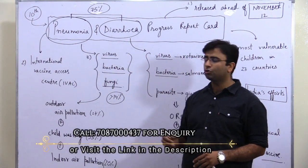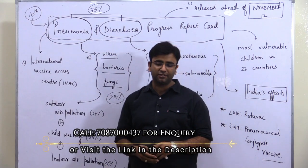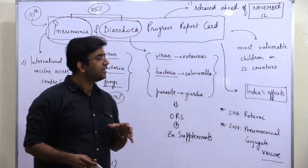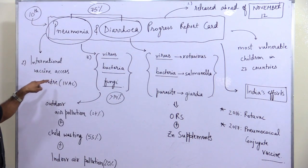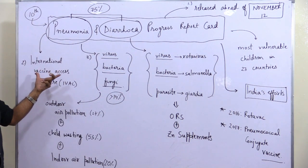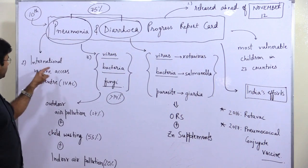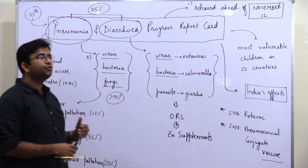The Pneumonia and Diarrhea Health Card has been released by the International Vaccine Access Center, a United States agency.